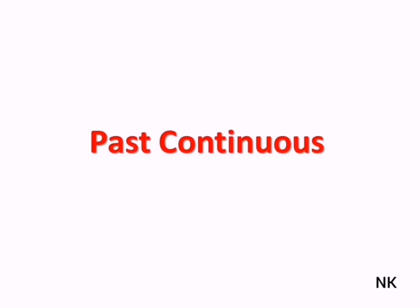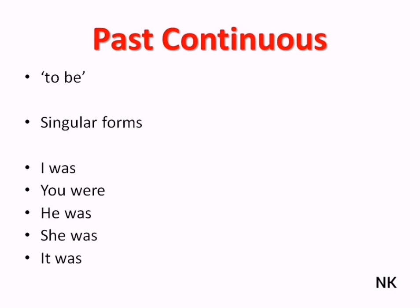Past continuous. But before you get started, it's good to know how to conjugate the verb 'to be' in its past tense. For the singular form: I was, you were, he was, she was, it was. For the plural forms: we were, you were, they were.